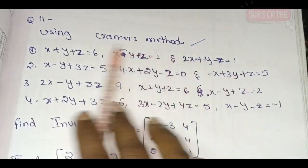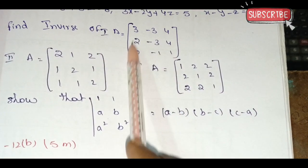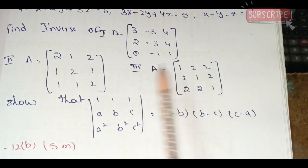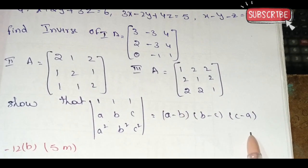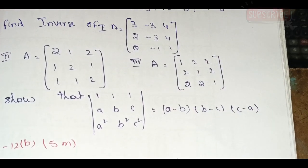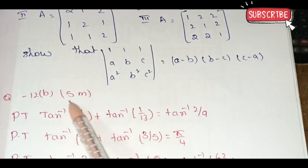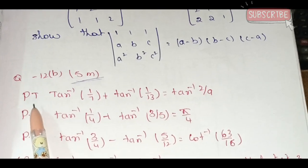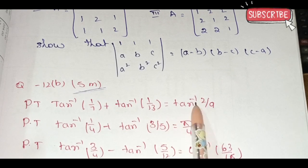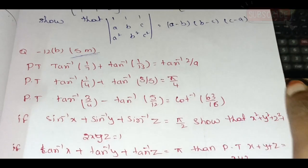Choose those four models. If we use E and in-C, I will prove it. Maximum Cramer's rule questions. Next, question 12b: prove that tan inverse 1/7 plus tan inverse 1/13 equals tan inverse 2/9 — you choose this model.